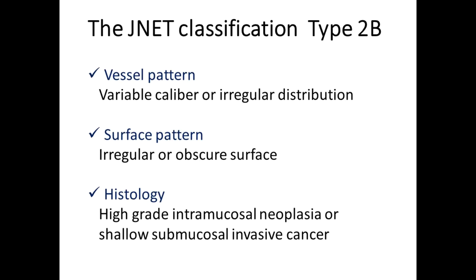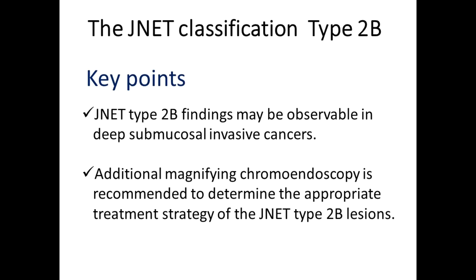The vessel feature of J-Net Type 2B is irregularity, which means that the calibre of the vessels is variable and their distribution is not regular. In contrast to Type 2A, the tubular structure on the surface becomes obscure or irregular. The most likely histology is high-grade intramucosal neoplasia or shallow submucosal invasive cancer. J-Net Type 2B findings may also be observable in deep submucosal invasive cancers. Additional magnifying chromoendoscopy is recommended to determine the appropriate treatment strategy for Type 2B lesions.